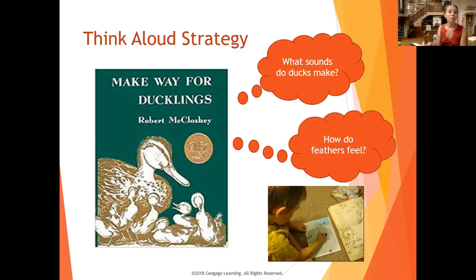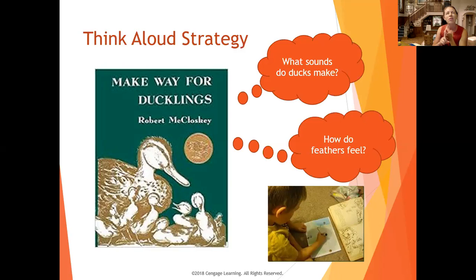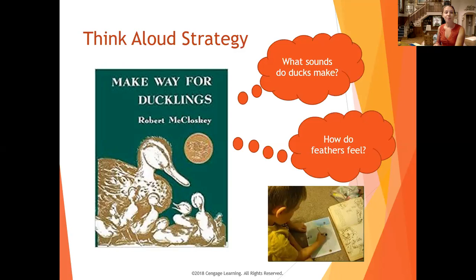For an example, we have the story Make Way for Ducklings — this would be the book I'd read aloud in my classroom. I want to use thinking aloud strategies. Before I even start the book, I might talk about our five senses as they deal with ducks: what sound does a duck make, how does a feather feel. Then as we go through the story, children can have that mental picture, and maybe they've got a crayon and they're drawing a part of the book. At the end, they can put their pictures in order for how the story goes based on their own mental images.